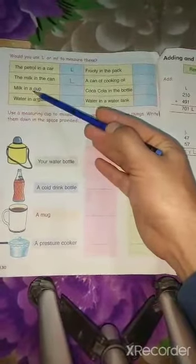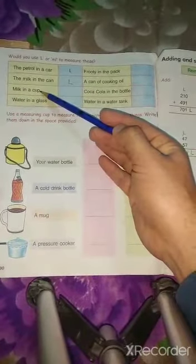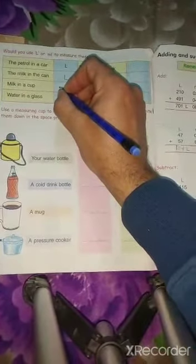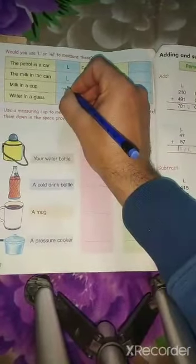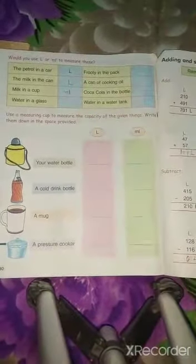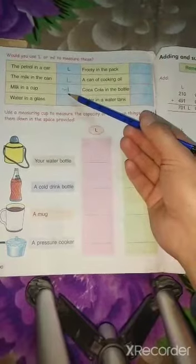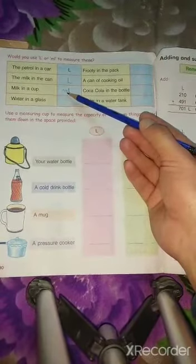Milk in a cup. A cup में milk किस में आएगा? ML. Because a cup होता है, its size is small. So, cup में milk किस में आएगा? ML में. Okay, ML.